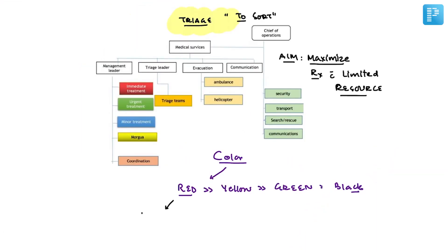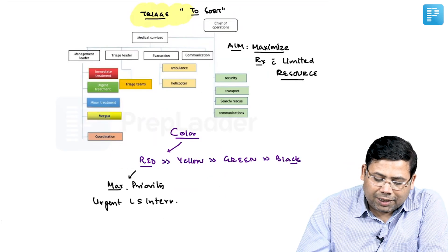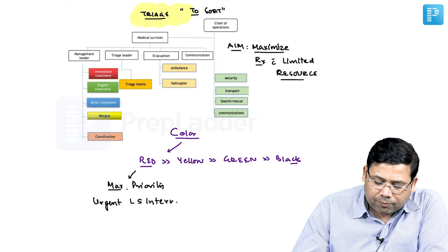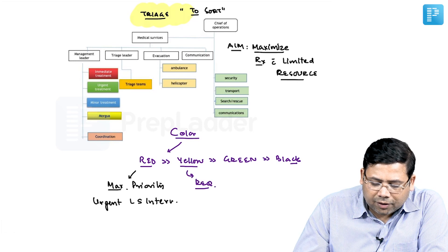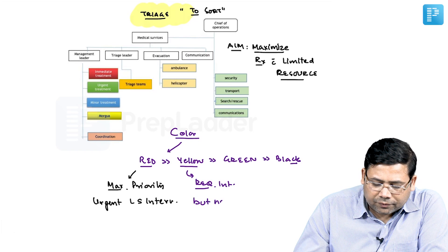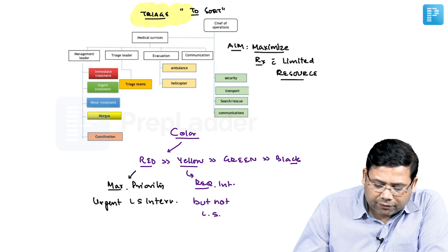Red is given maximum priority. Who belongs to red? The people who require urgent life-saving intervention — they are the ones who require urgent life-saving intervention. Yellow patients require intervention, but not life-saving intervention.